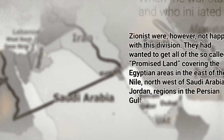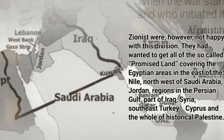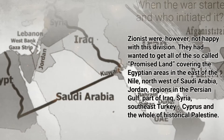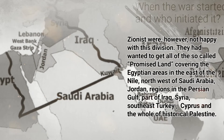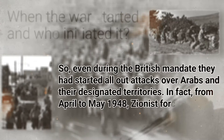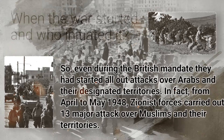They had wanted to get all of the so-called promised land, covering Egyptian areas east of the Nile, northwest of Saudi Arabia, Jordan, regions in the Persian Gulf, part of Iraq, Syria, southeast Turkey, Cyprus, and the whole of historical Palestine. So even during the British mandate, they had started attacking and occupying Arab and UN-designated territories.